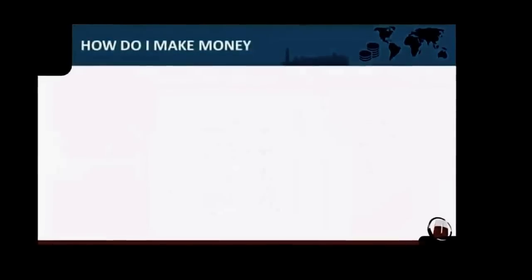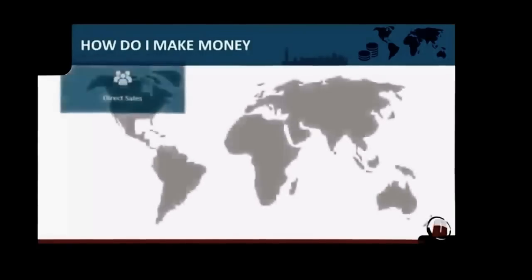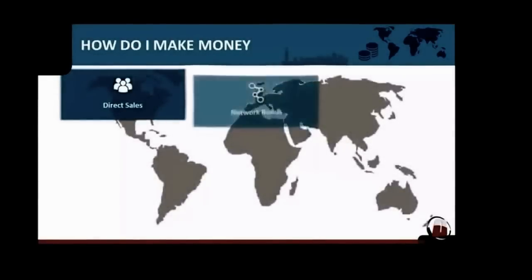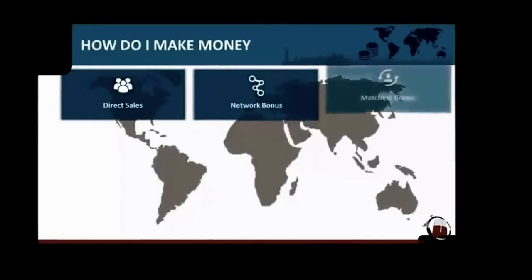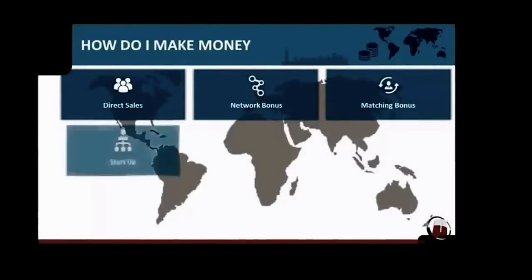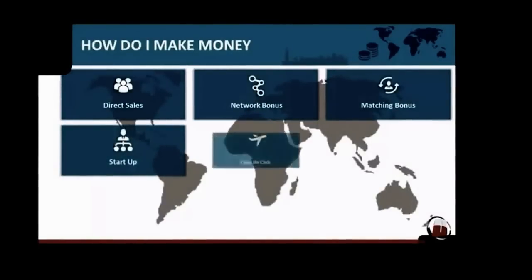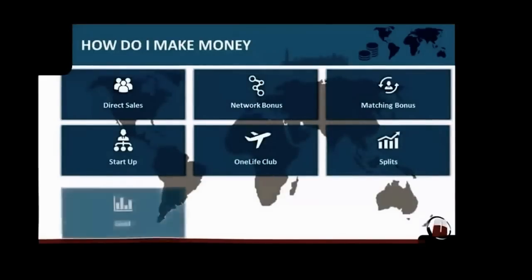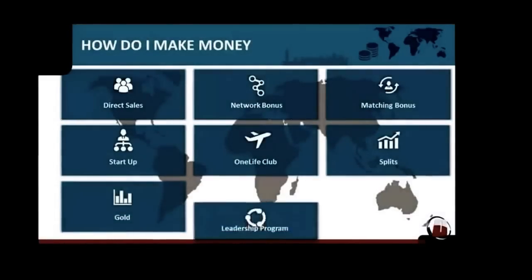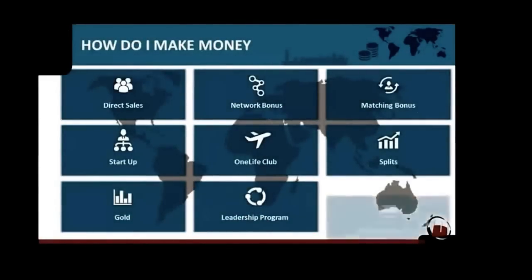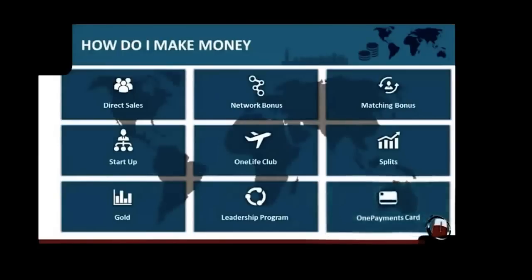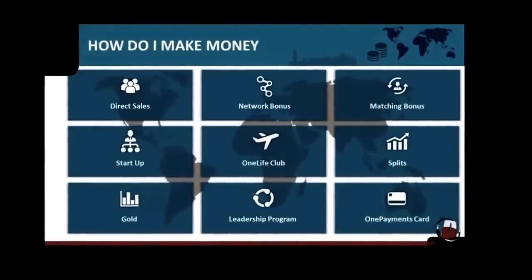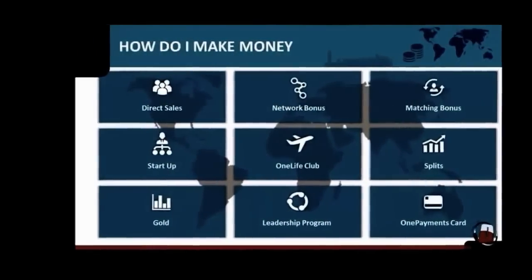How can you make money with One? There are nine different ways to profit from our bonus program: the direct sales bonus, the network bonus, the matching bonus, the startup bonus, One Life Points, double your money with splits, the gold bonus, and our leadership program. You also receive a free e-wallet for safe and secure payments.